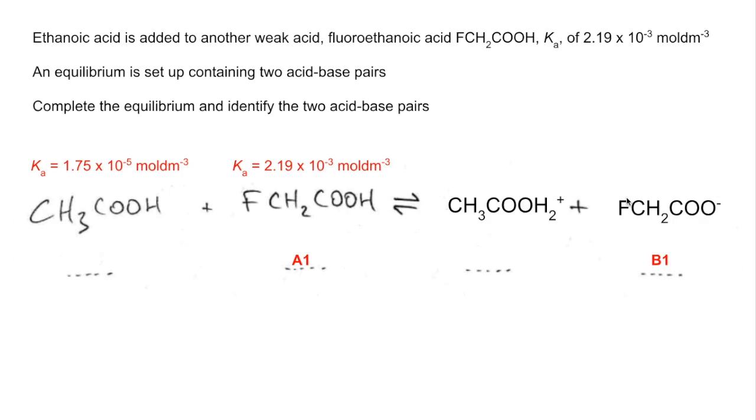When that accepts an H plus ion, in other words acts as a base, it becomes that. The rule for these acid-base pairs is you can't have two acids on the same side. So this is obviously a base and it's got to be therefore base 2. And its conjugate acid is obviously that, so that's A2.